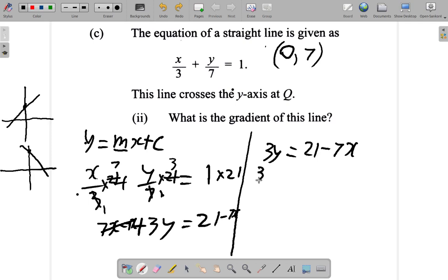Rewrite the right-hand side to get 3y is equal to negative 7x plus 21. You see that? And then divide by 3. If I divide by 3, this by 3, this by 3, this by 3, 3 cancels 3. So I have y equals negative 7 over 3x plus 7.